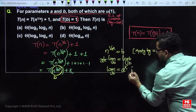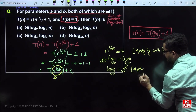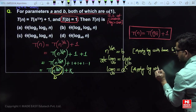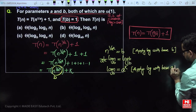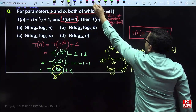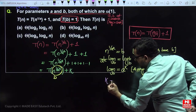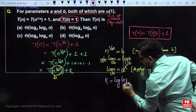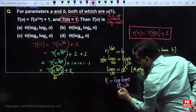Applying log base a to both sides gives k = log_a(log_b(n)). So k = log log n, where the inner log is base b and the outer log is base a.